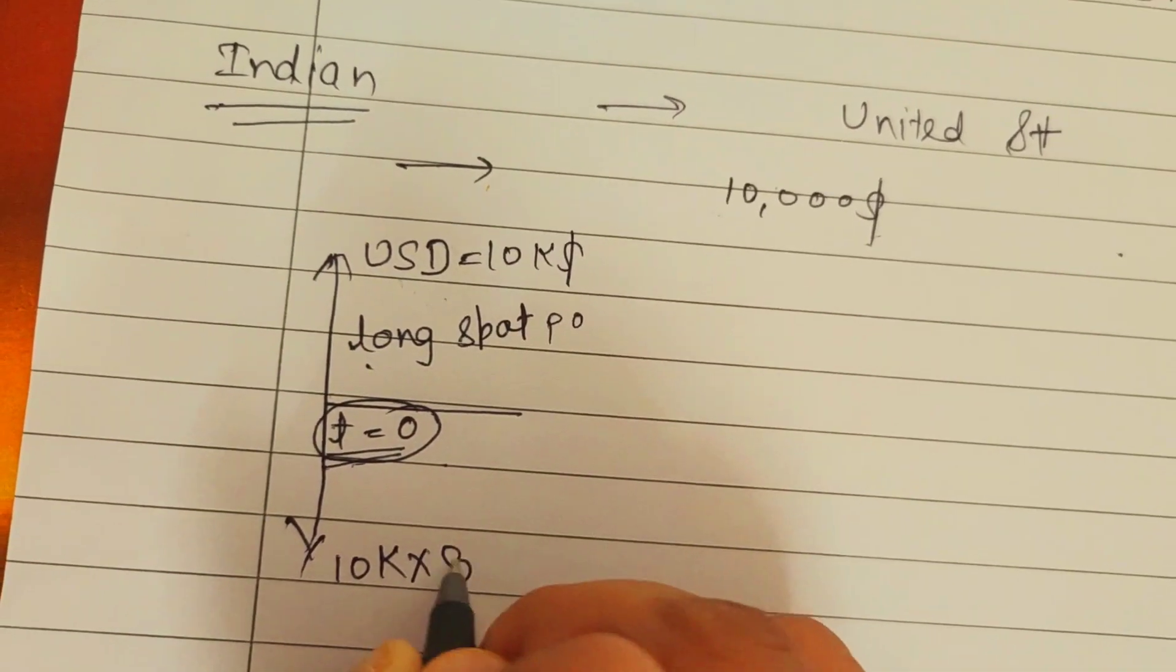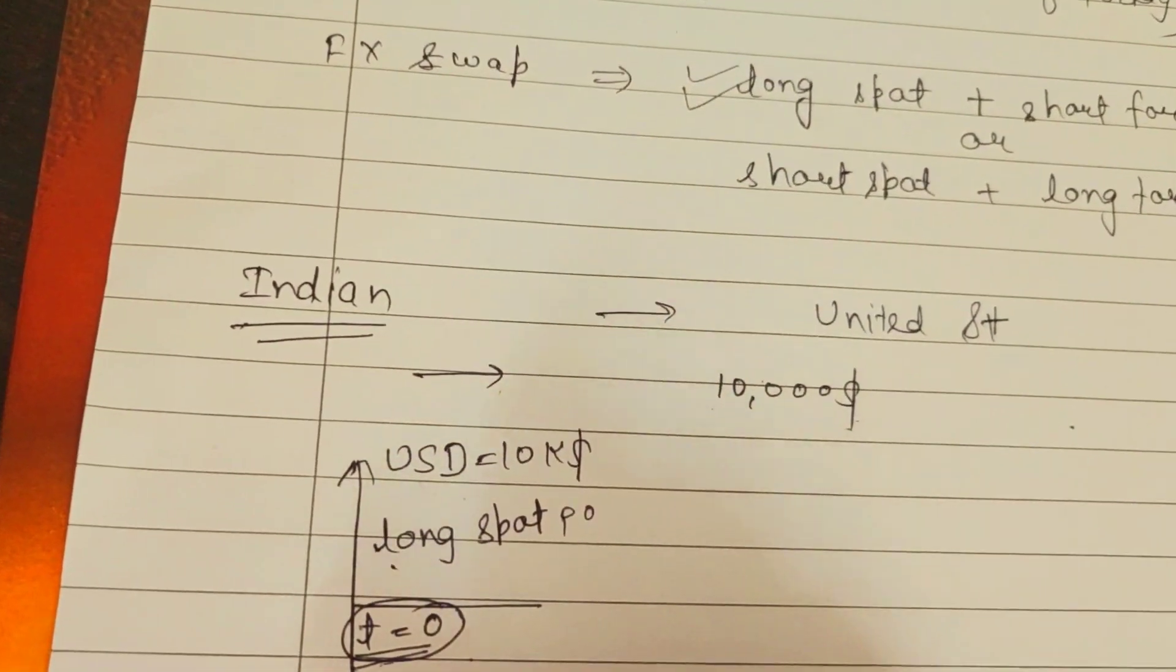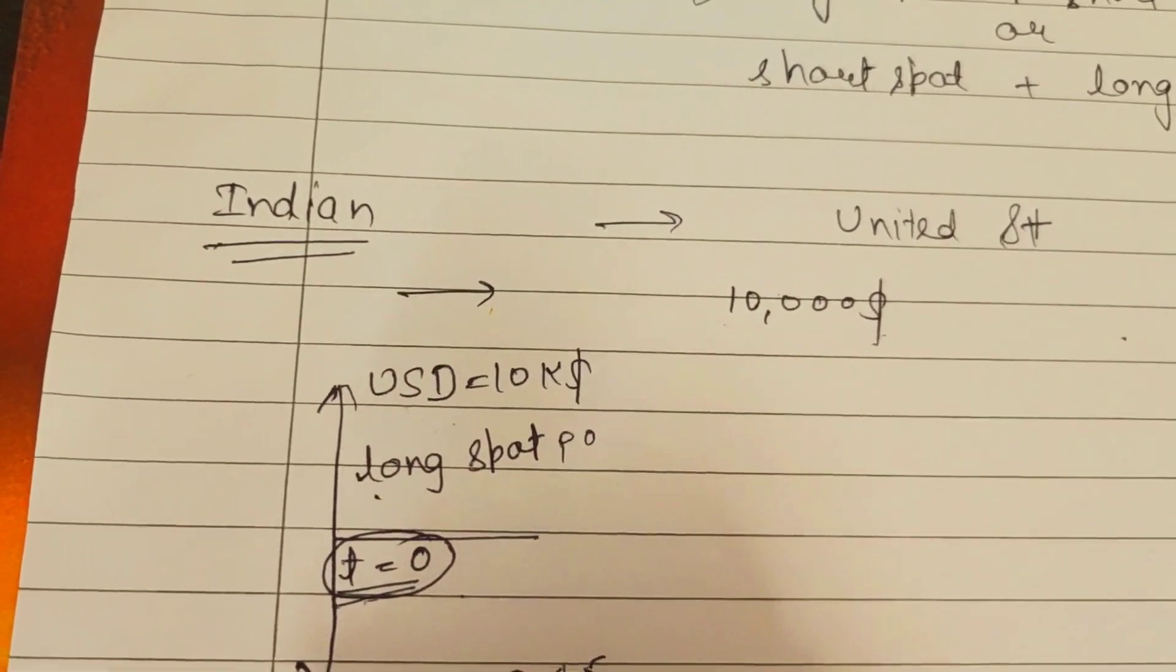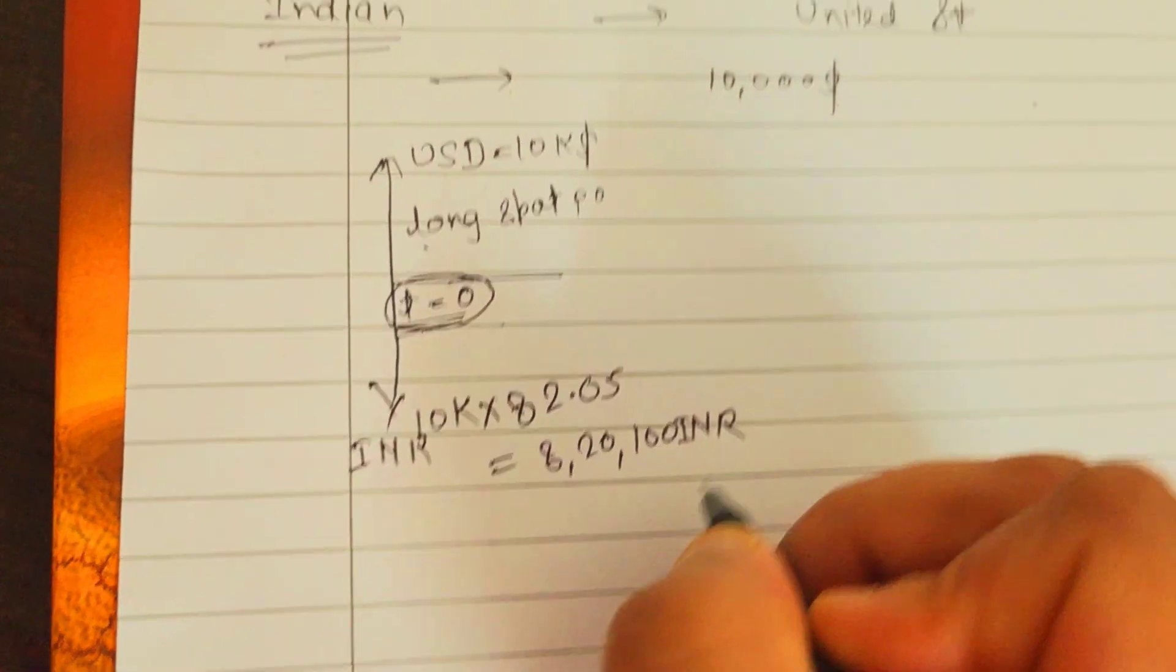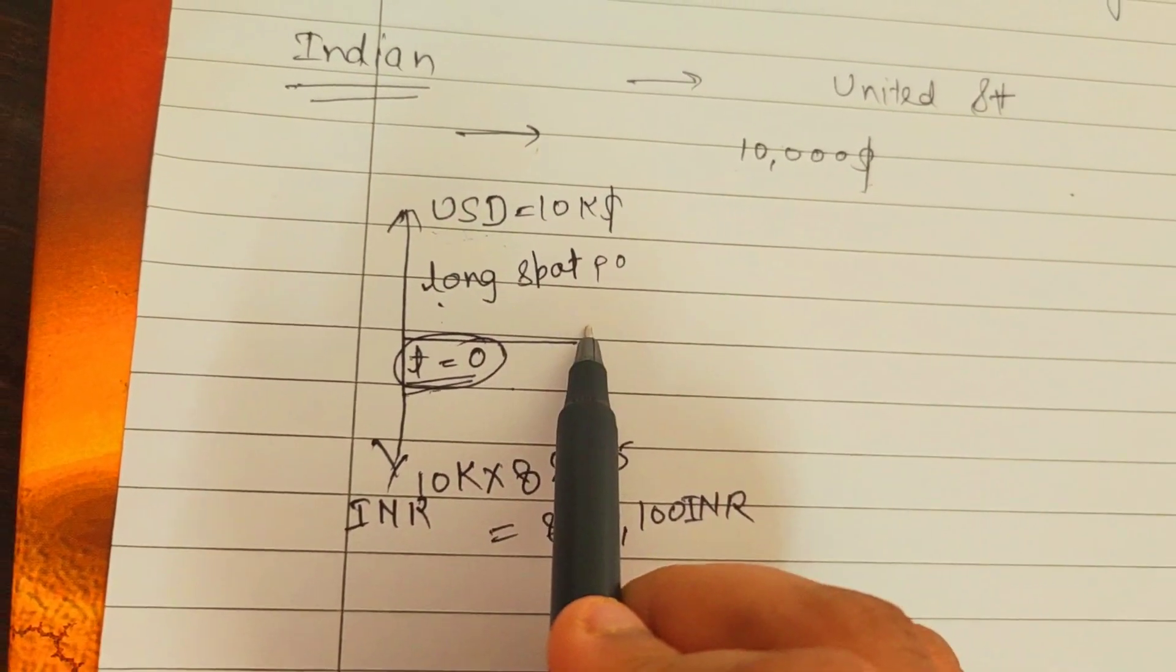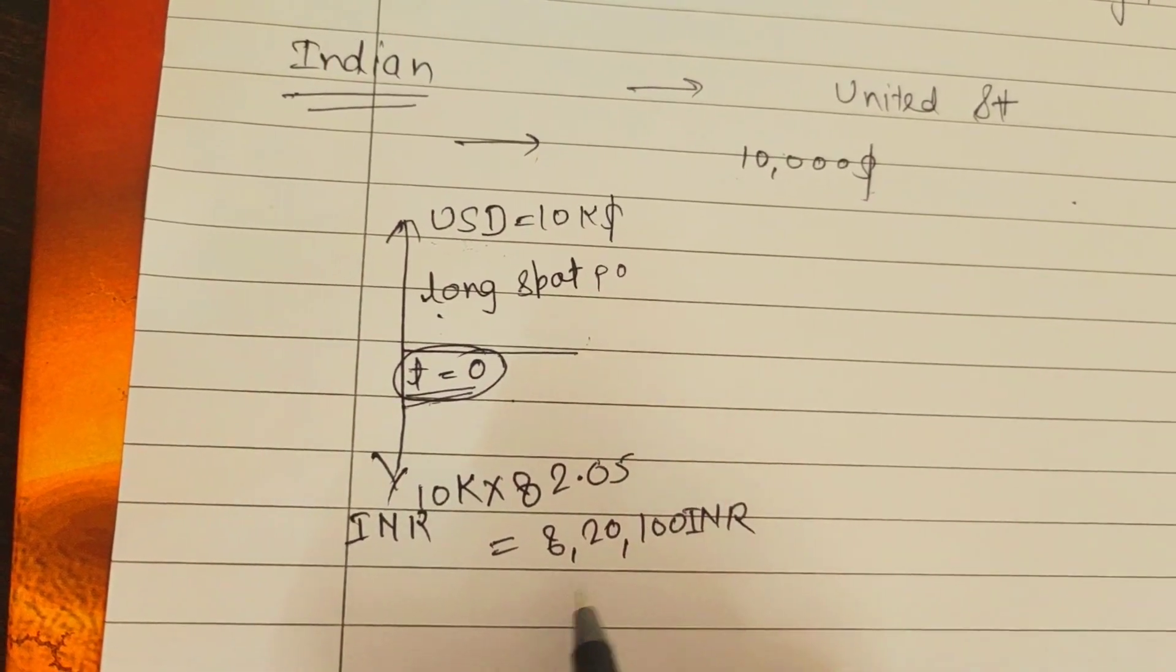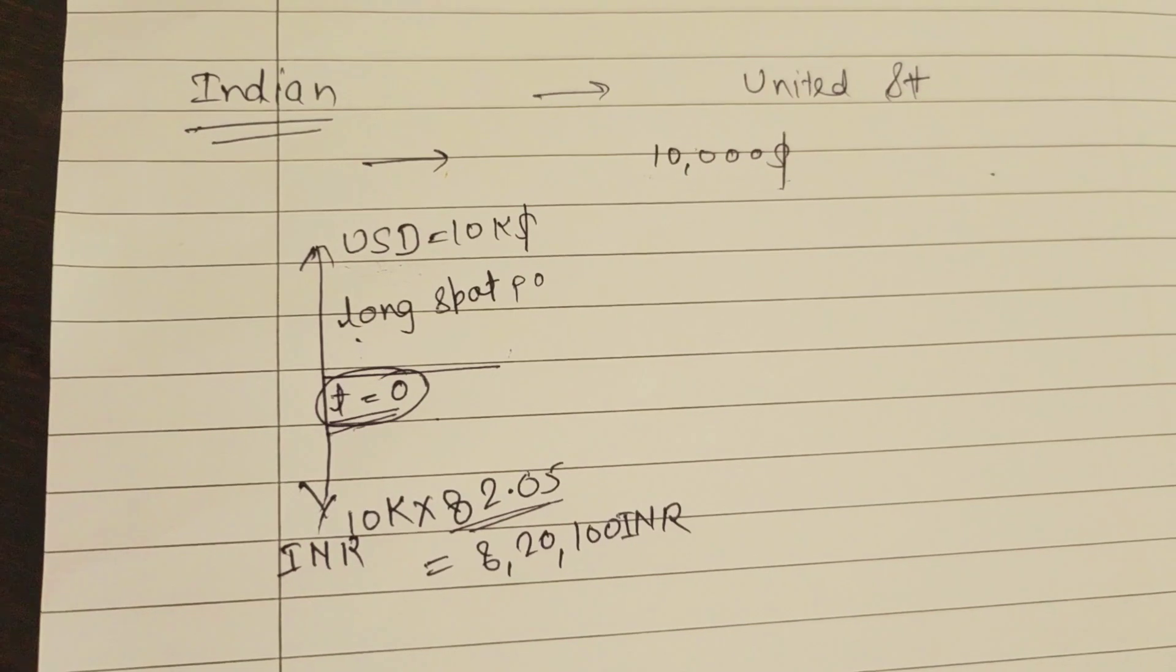This person is getting into a contract to purchase USD. What this particular company has to pay is 10k into 82.05, the rate as of today, in INR. This will be 8 lakh 20 thousand 100 in INR to purchase this much USD. This is a long spot position.